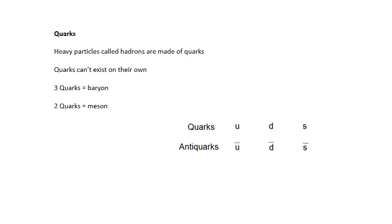And quarks can't exist on their own. You've got particles which have three quarks, and they're called baryons. And then particles which have two quarks are called mesons. Remember, hadrons are heavy. Mesons are middleweight, I remember. So three quarks is a baryon. Two quarks is a meson.